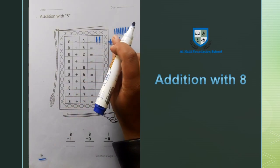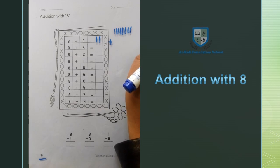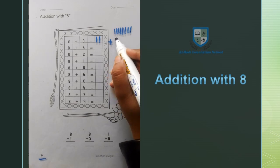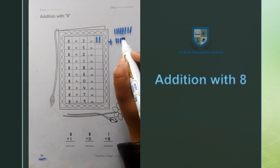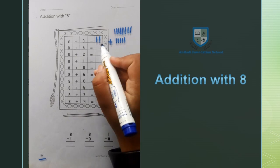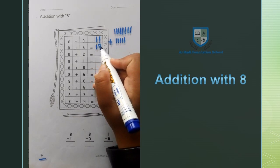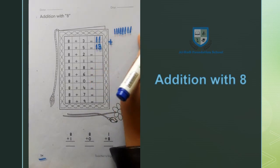Next number is 8 plus 5. So we will add 8 with 5 lines: 1, 2, 3, 4, 5. Now we will count them. 8, 9, 10, 11, 12, 13. 8 plus 5 equals 13.